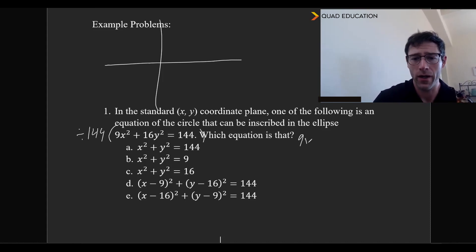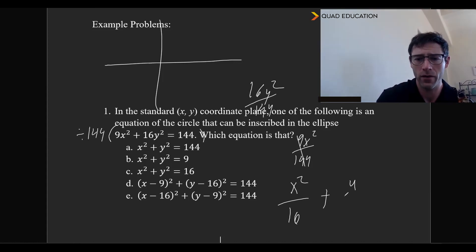And so 9x² over 144, that 9 is going to cancel out, and that's going to leave us with x² over 16. And then if we have 16y over 144, y squared, that's going to leave us with 9 in the denominator. Because 16 times 9 is equal to 144, that's how we get this number over there.